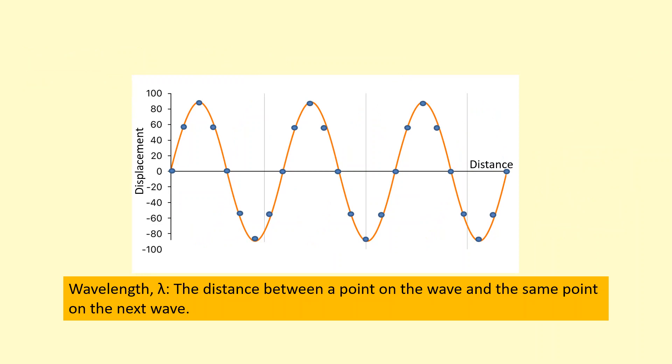Another important quantity is the wavelength, which is the distance from a point on the wave to the same point on the next wave. For example, from peak to peak or from trough to trough like this, but it can also be just from any point to the exact same point on the next wave.